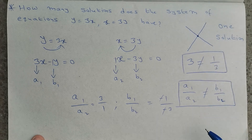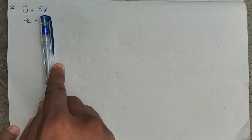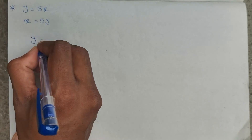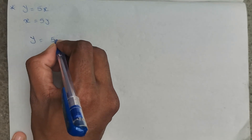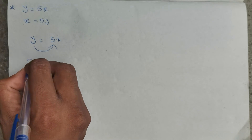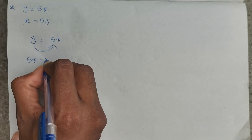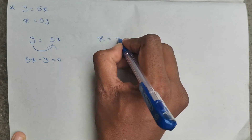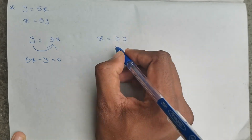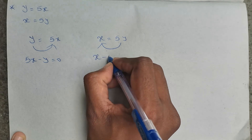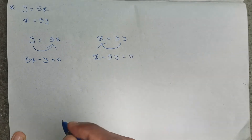Let us check one more similar question. Given y equals 5x and x equals 5y. The first equation rearranges to 5x minus y equals 0. The second equation rearranges to x minus 5y equals 0.